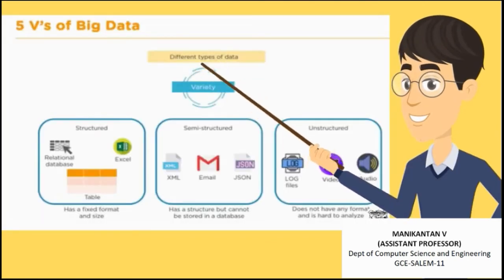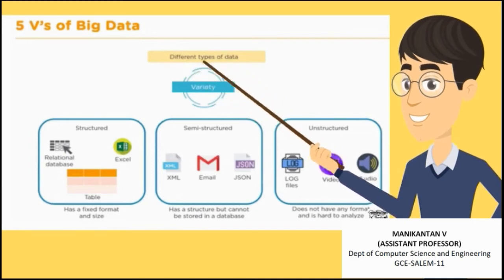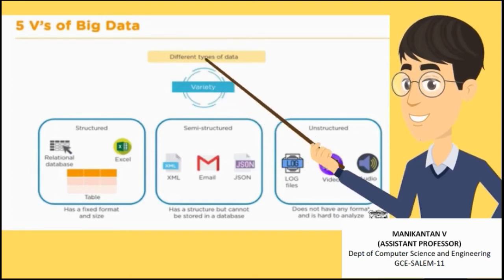The next aspect of big data is variety. This is where we talk about structured data, semi-structured data, or unstructured data. What is the difference — when do you call data structured, semi-structured, or unstructured? Let's look at an example before we theoretically discuss this. The next aspect is value.